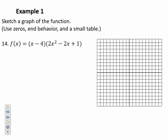For number 14, we work through the same process. The zero at x = 4 comes from a factor appearing once, so it's a cross point. The factor 2x² − 2x + 1 is not factorable; using the quadratic formula gives a negative discriminant, producing imaginary solutions. So x = 4 is the only x-axis interaction.